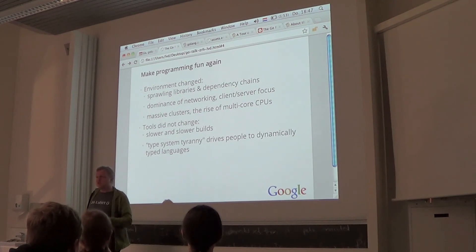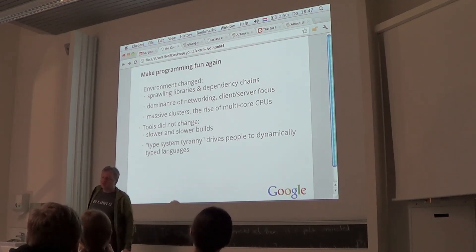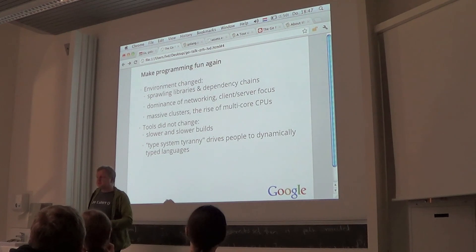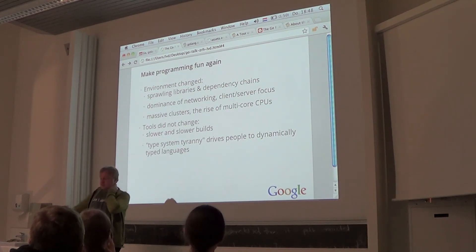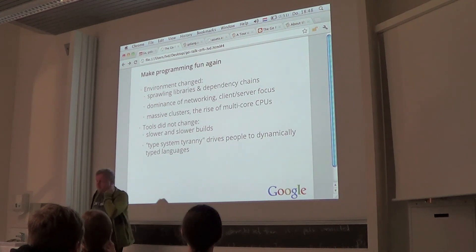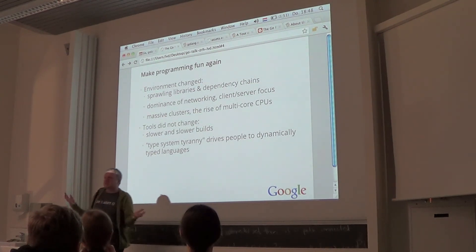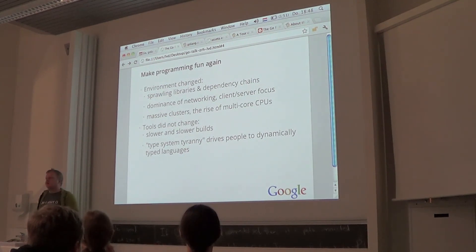Nowadays, much more than ten years ago, networking is the norm — you write servers in massive clusters that do RPC calls all over the place. Within one server you have multi-cores to keep busy, and working with threads and mutexes between them is very error-prone. Because of this changed environment our builds get slower and the development cycle gets slower. There's an observation by Rob Griesemer about 'type system tyranny' in languages like C++ and Java — the type system is supposed to help you, but in practice it gets in the way, and people just want to write Python and figure it out later.